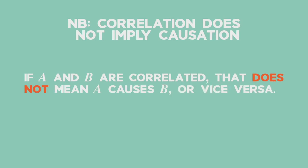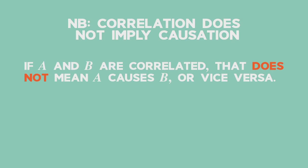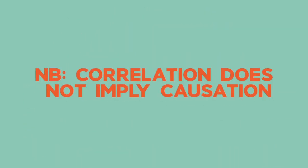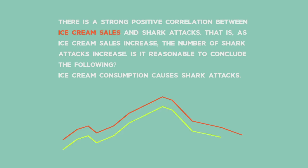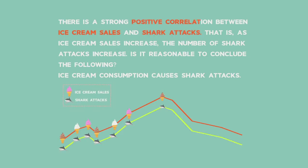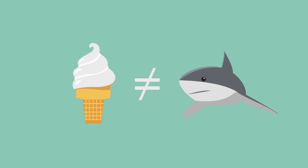This is a common mistake made by many people, and one you must be aware of. For example, ice cream sales and shark attacks are correlated. They both increase as the temperature goes up.